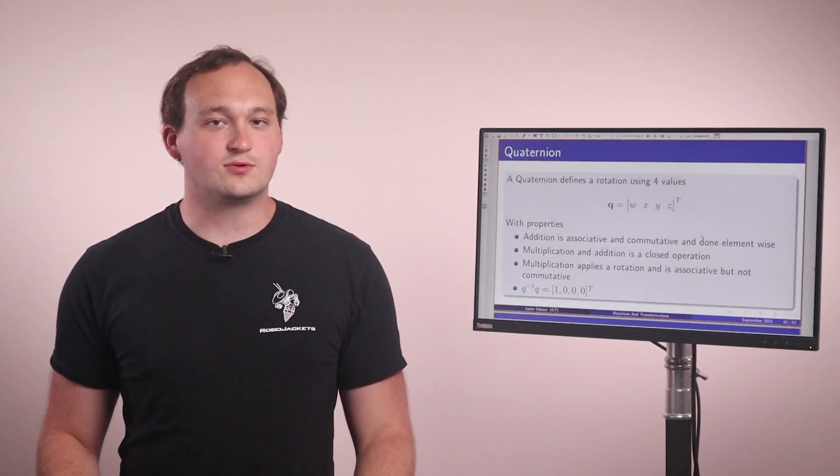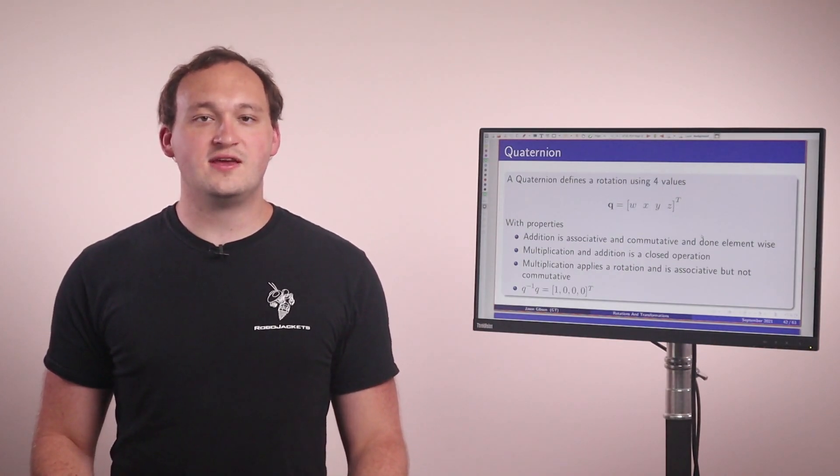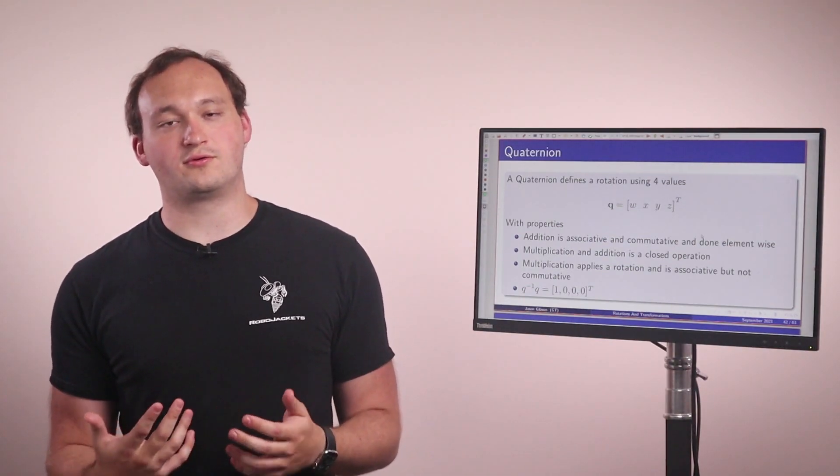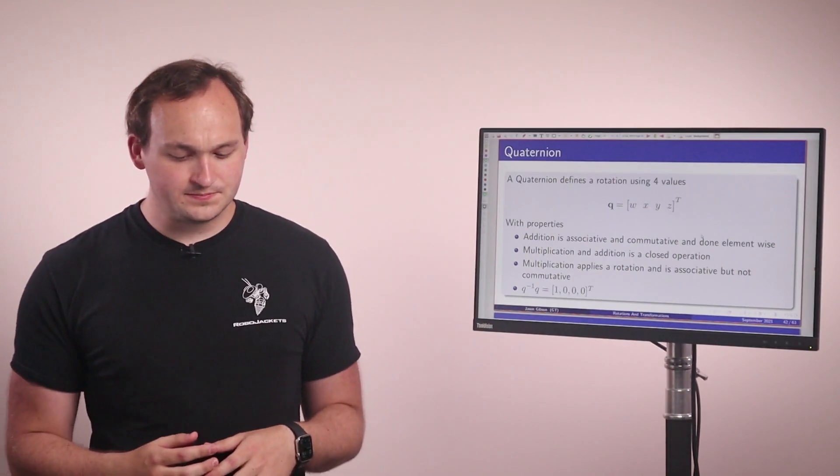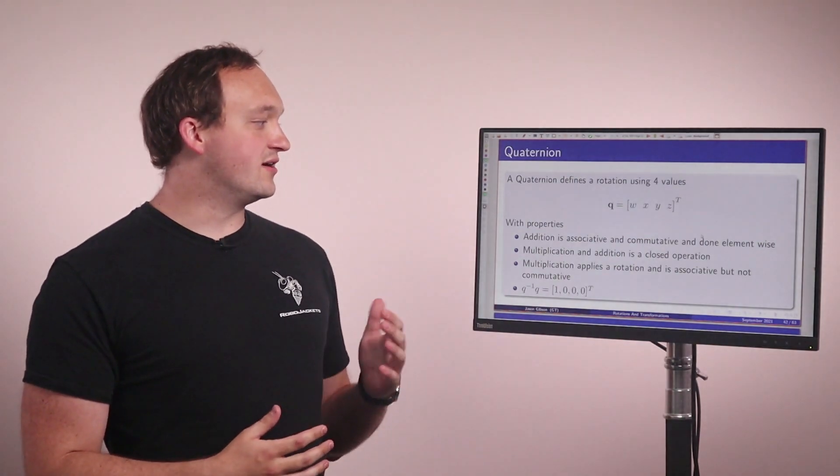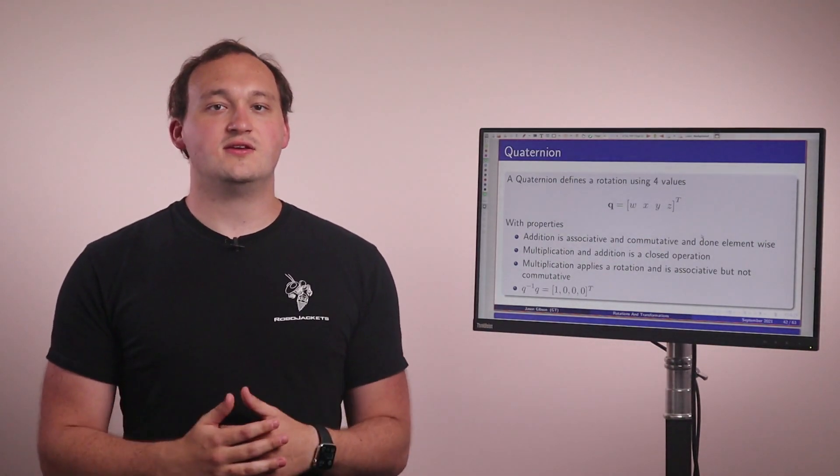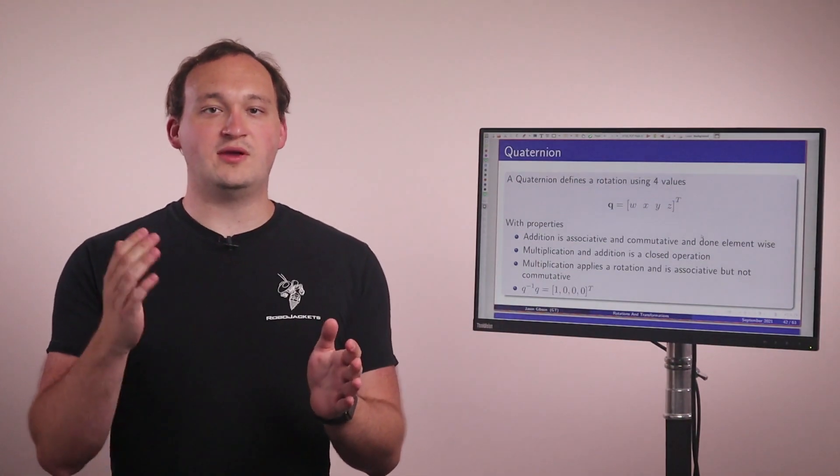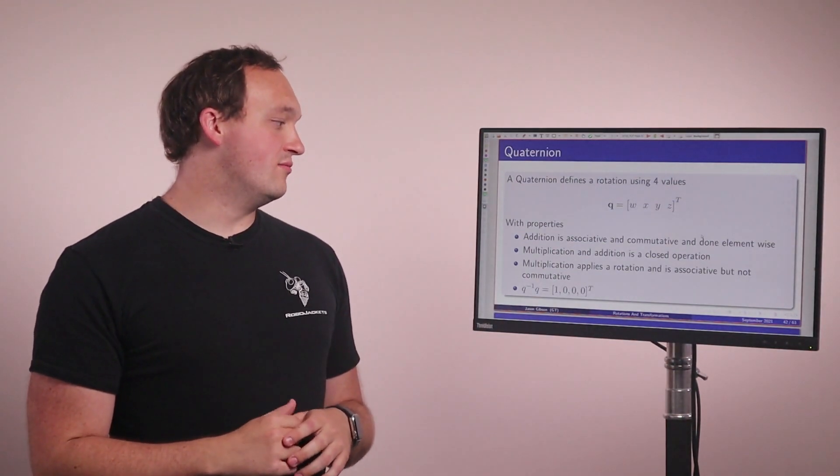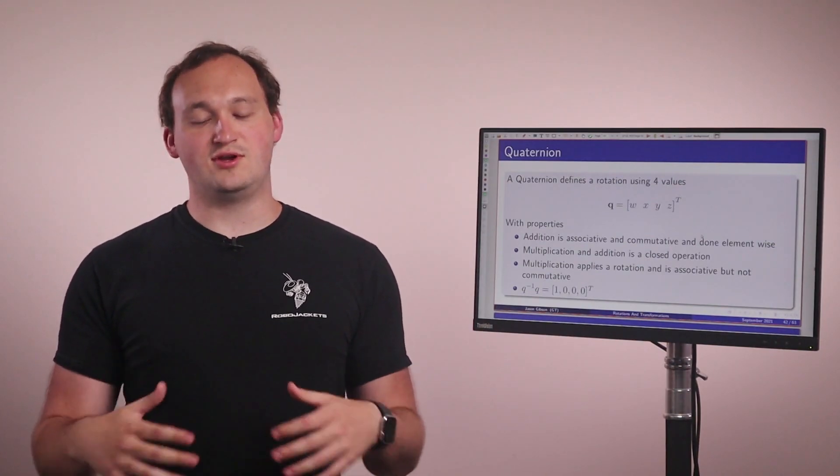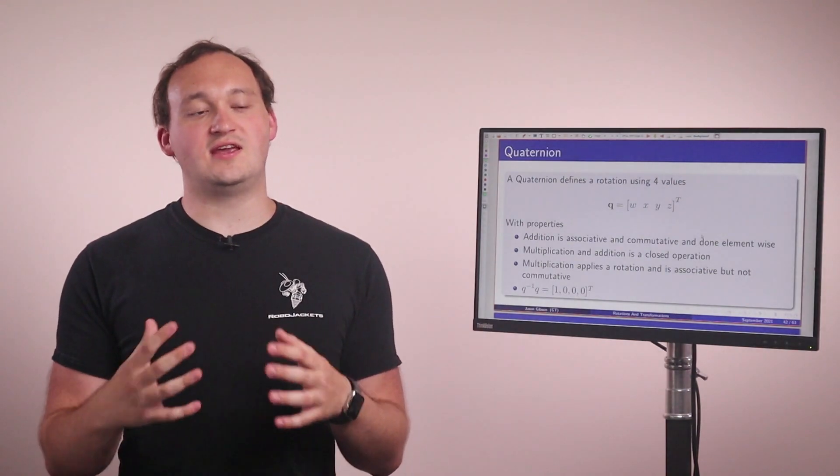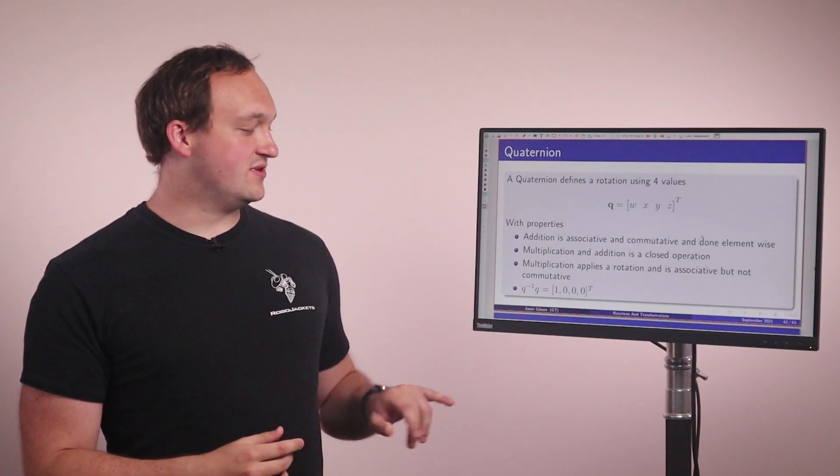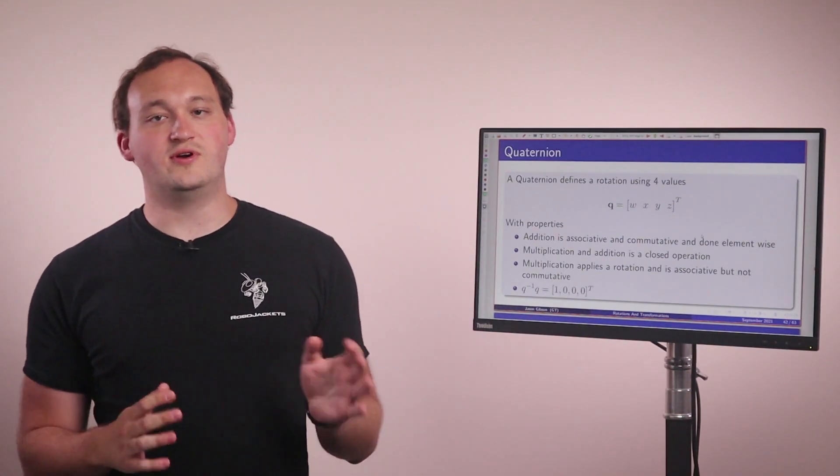So the third representation of rotation is quaternion. Quaternions are defined based on four values and there's not really a good intuition about what those four values represent in the real world. I still to this day cannot look at a quaternion and tell you what the orientation should be. So there's a lot of useful properties though. We have things like addition is associative and commutative and done element wise. So this is very computationally efficient. We have multiplication and addition is a closed operation. So again, you can take a quaternion, multiply by a quaternion and get out a quaternion. And multiplication applies a rotation and it's associative but not commutative. This is just like the matrix multiplication case and you can actually represent the same expressiveness of rotation with a quaternion that you can with a rotation matrix. So there's also the unit quaternion, which is defined here. So you have Q inverse Q is equal to 1, 0, 0, 0.